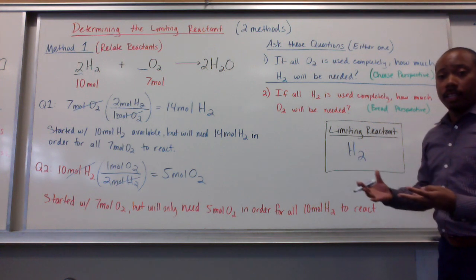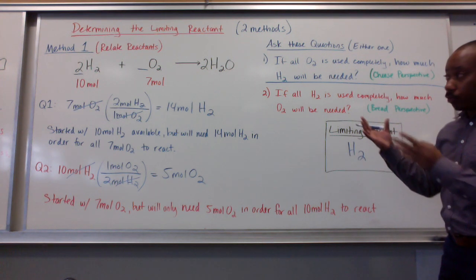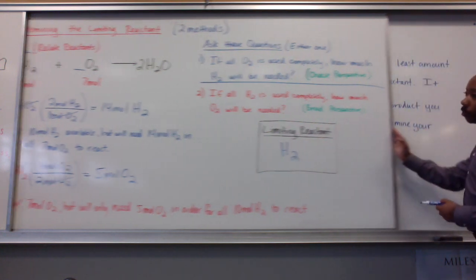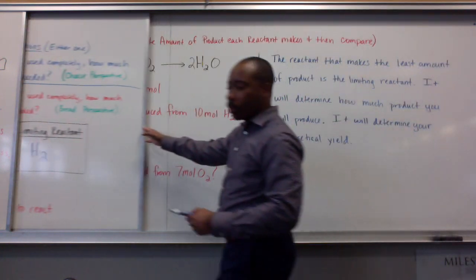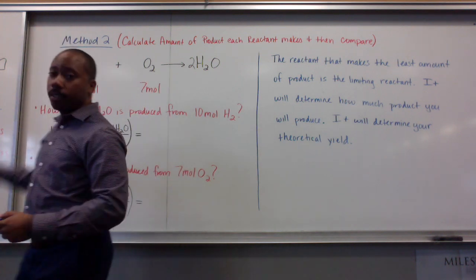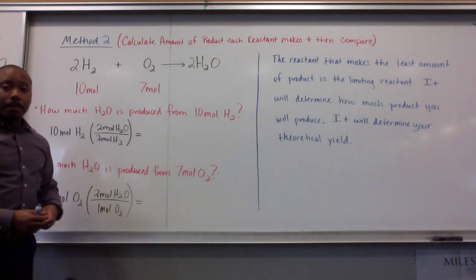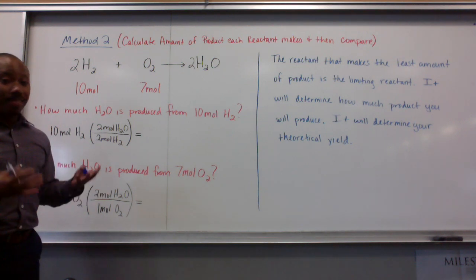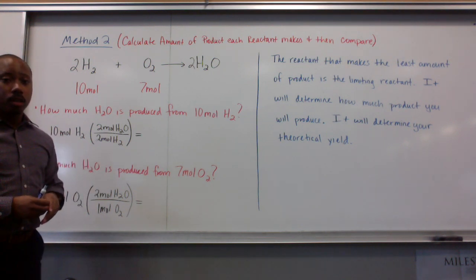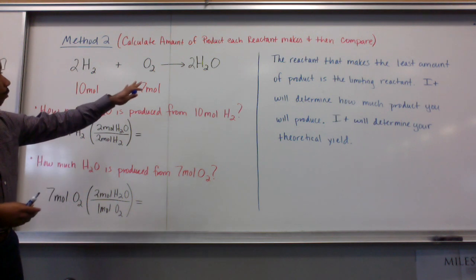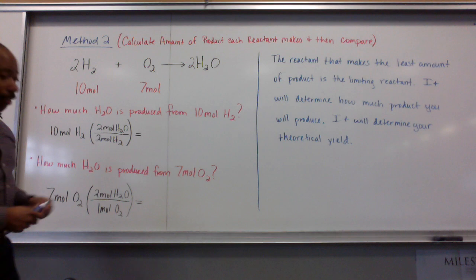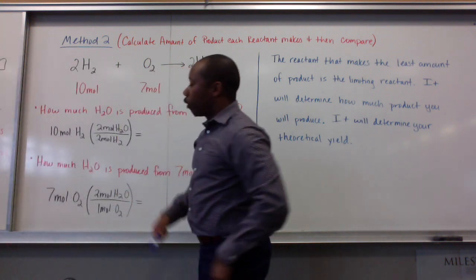This is one method to finding out which reactant is going to be limiting. Another method is this. You can calculate the amount of product that each reactant is going to produce, and then compare those 2 amounts. So, using the same equation, same initial amounts of reactants, let's look into this.